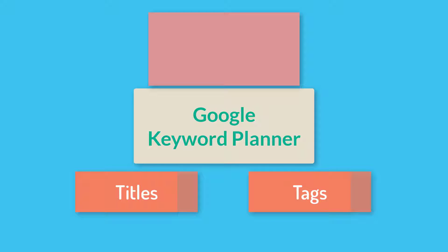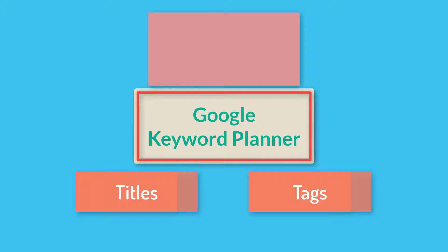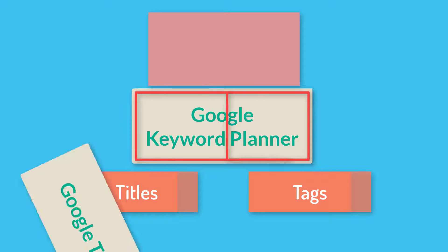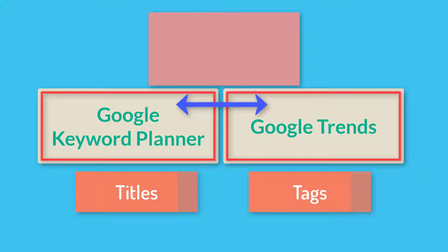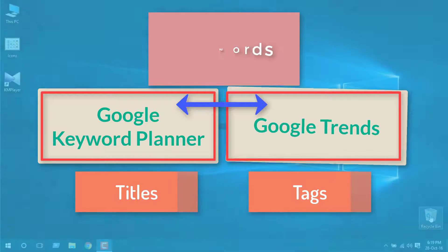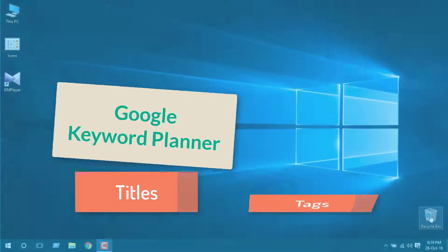But recently Google has removed one of the main features from its Keyword Planner, so now we can't see whether the search for a keyword is increasing or decreasing. Today I'm going to show you how to use Google Trends with Keyword Planner to select exact keywords for our videos and to see whether the search trend is increasing or decreasing. This will also help us in deciding the topic for making YouTube videos. So let's get started.